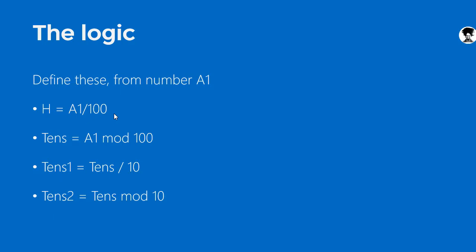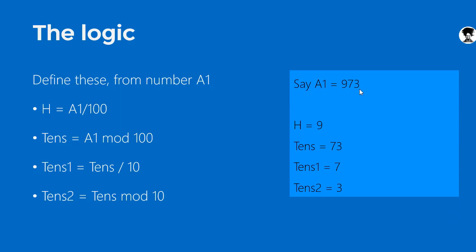H is equal to A1 divided by 100, so H represents how many hundreds are in the number. Tens is A1 modulus 100 — the remainder after dividing by 100. Tens1 is that tens value divided by 10, and Tens2 is tens modulus 10. This logic works for numbers up to 999, and once we figure out the logic we can scale it up to handle numbers up to one million or one billion.